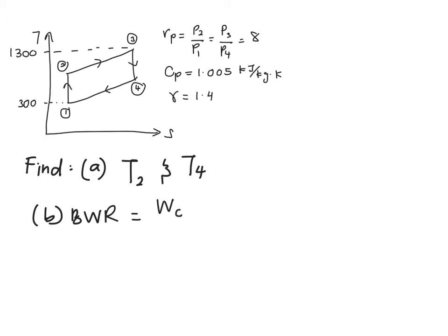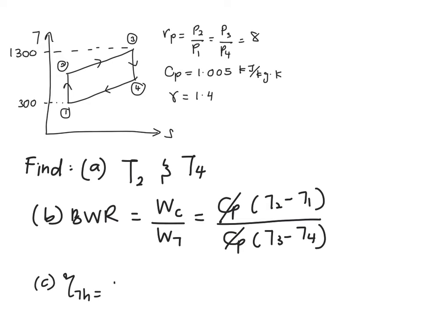Next, you are going to look for back work ratio of your compressor, which is work of your compressor divided by work of your turbine. In this case, your compressor is between 1 and 2 and your turbine is between 3 and 4. Because you have these both CP terms, you can cancel them out. Number 3, you will need to find the thermal cycle efficiency, which is 1 minus Q out over Q in. Your Q out is in state 4 to 1, and your Q in is the combustion part, state 2 to 3. Because CP is a constant value, you can cancel out both terms.